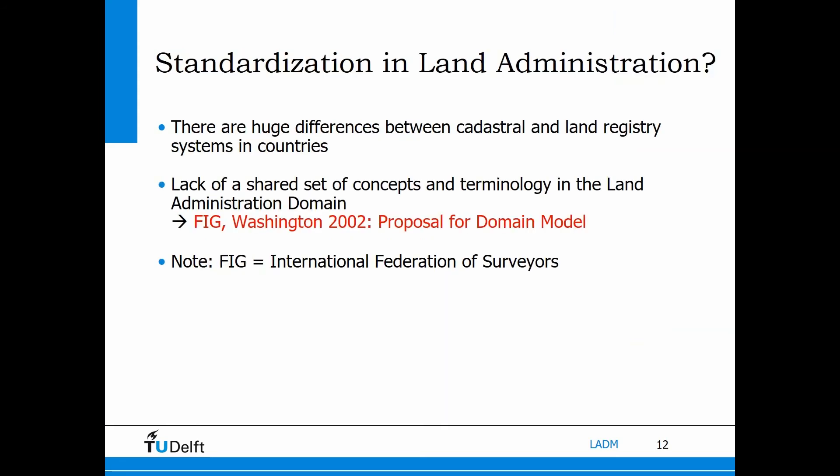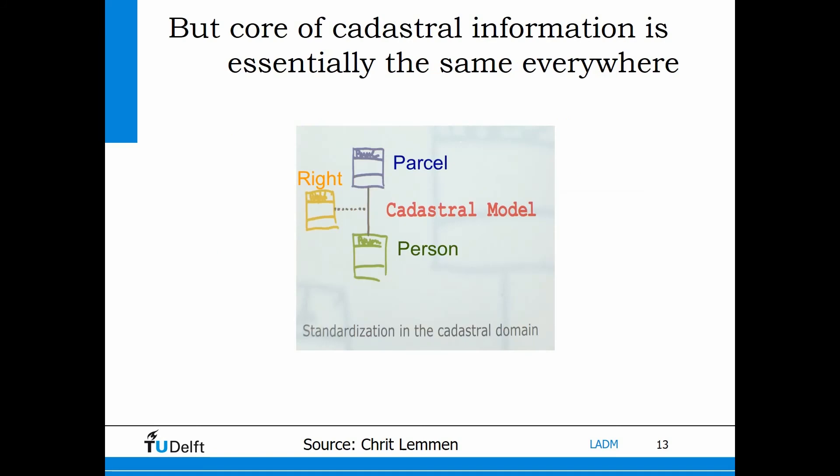But you could ask: is this possible? Because there are supposed to be differences between all these cadastral and land registry systems in the world — every country has its own legislation, software implementation, and set of tools. Despite this question, FIG decided in 2002 to work on standardization. FIG is the International Federation of Surveyors. Basically, the information is much the same: we have land covered by parcels, with persons using the land, having ownership rights or other rights, and these rights are recorded in this land administration process.